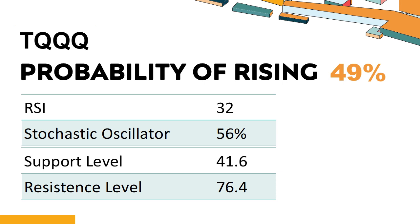When the stochastic oscillator stays between 50 and 80, it may indicate that the stock is experiencing a mild downtrend with some selling pressure. In this case, an oversold signal could indicate a potential buying opportunity. TQQQ has a 49% probability of rising stock price. Combining multiple technical analysis indicators, TQQQ has three bullish signals and four bearish signals.